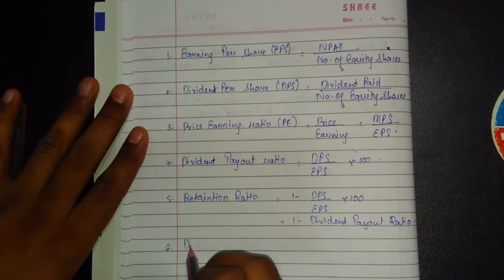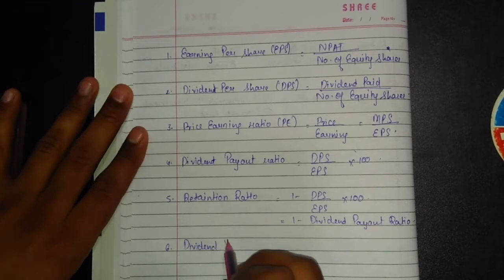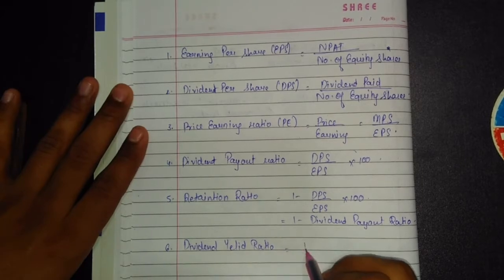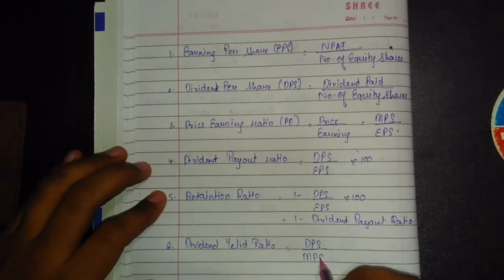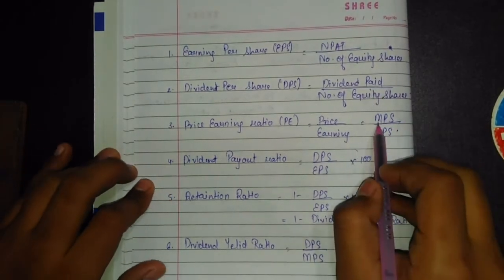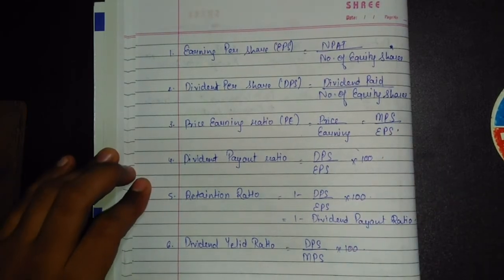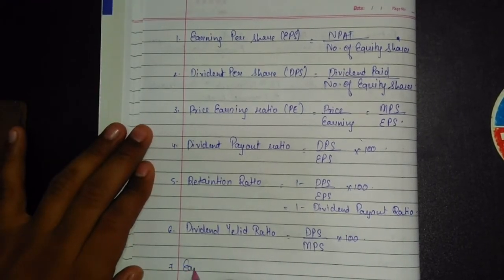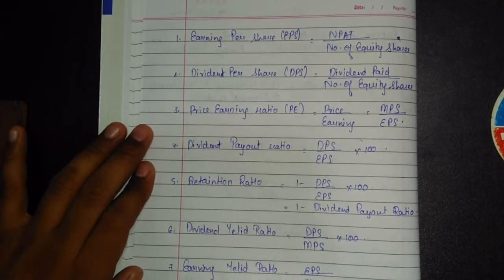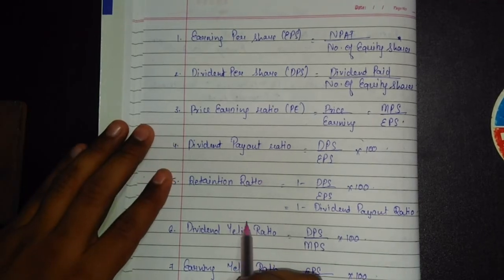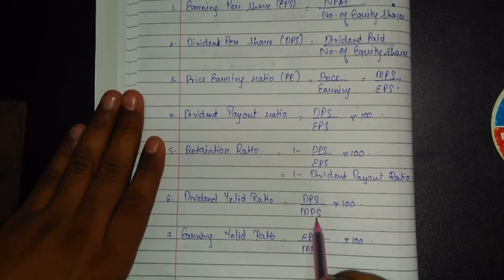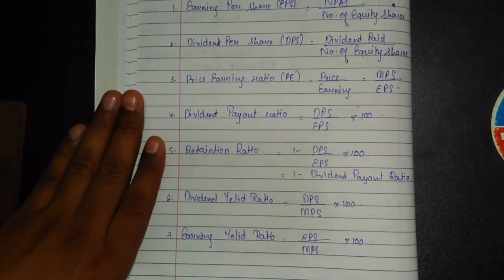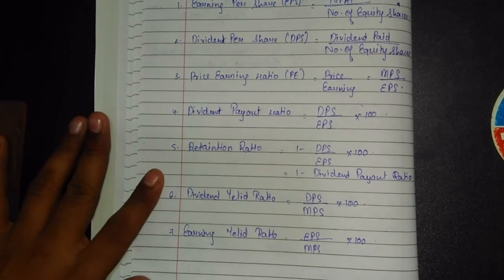The 6th formula is the Dividend Yield Ratio — DPS (Dividend Per Share) divided by MPS (Market Price Per Share), multiplied by 100. A helpful memory tip: whenever you hear 'Yield Ratio,' the denominator is always MPS. If it is a dividend yield ratio it uses DPS; if it is an earnings yield ratio it uses EPS in the numerator.